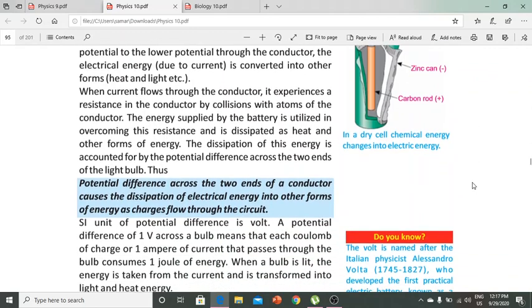When current flows through the conductor, it experiences resistance from collisions with the atoms of the conductor. The energy supplied by the battery is utilized in overcoming this resistance and is dissipated as heat and other forms of energy. This dissipation of energy is accounted for by the potential difference across the two ends of the light bulb.